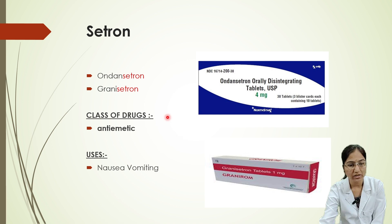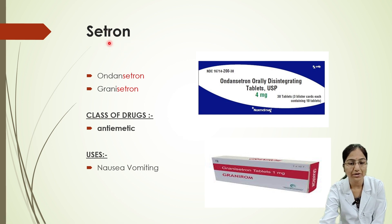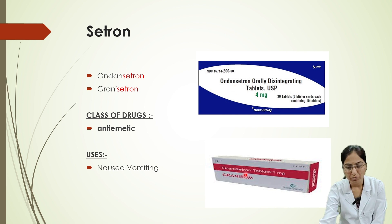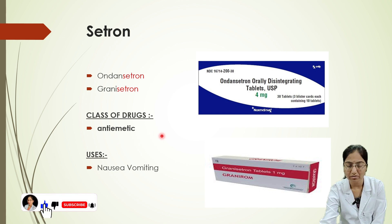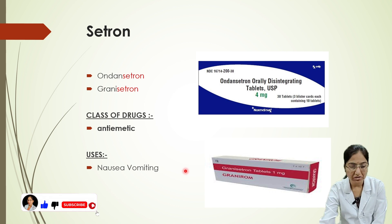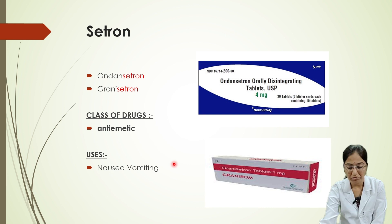Next, we'll look at drugs whose names end with '-setron'. Examples include ondansetron and granisetron — you can observe the words ending with '-setron'. This drug class is anti-emetic, and it is given for nausea and vomiting.